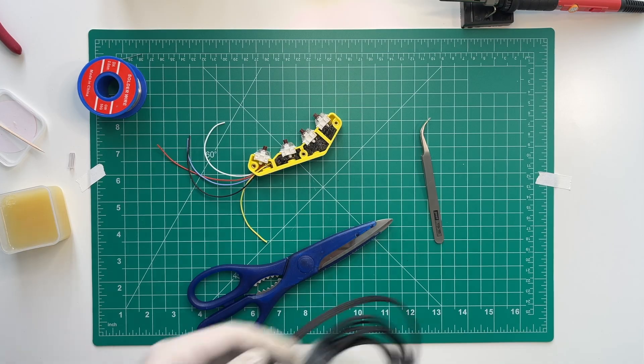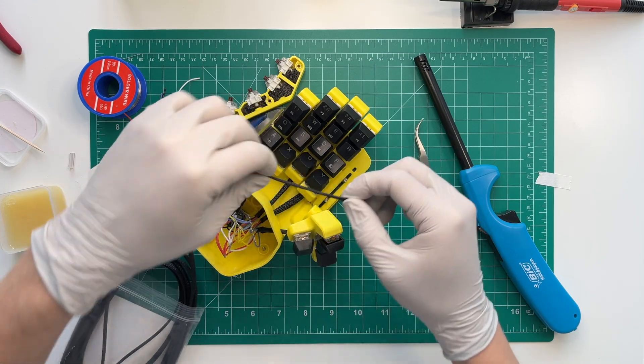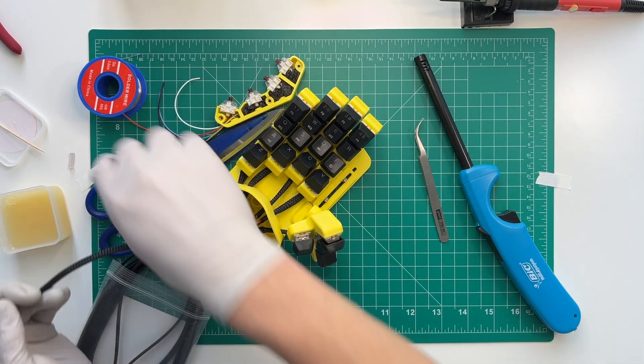We are almost done with the finger tower. The finishing touch is to thread the wires through the braided sleeve.